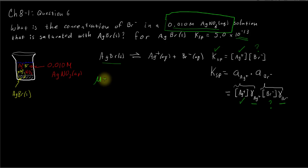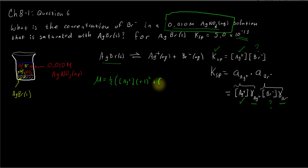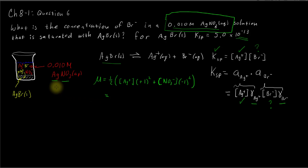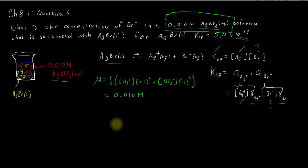The ionic strength, using our formula, is one half times the molarity of the silver ion times its charge (+1) squared, plus the molarity of the nitrate times its charge squared. Since silver nitrate is a one-to-one electrolyte — one positive cation and one negative anion per mole — the ionic strength is simply equal to the molarity. So the ionic strength is 0.010 molar. Now we need to find the activity coefficients for silver and bromide at this ionic strength.